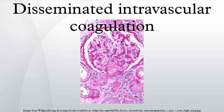Pathophysiology: Under homeostatic conditions, the body is maintained in a finely tuned balance of coagulation and fibrinolysis. The activation of the coagulation cascade yields thrombin that converts fibrinogen to fibrin, the stable fibrin clot being the final product of hemostasis. The fibrinolytic system then functions to break down fibrinogen and fibrin. Activation of the fibrinolytic system generates plasmin, which is responsible for the lysis of fibrin clots. The breakdown of fibrinogen and fibrin results in polypeptides called fibrin degradation products or fibrin split products.